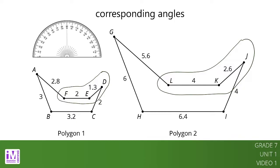The angle measures in Polygon 2 are the same as the corresponding angle measures in Polygon 1. This means that the measure of angle J-K-L is the same as the measure of angle D-E-F.